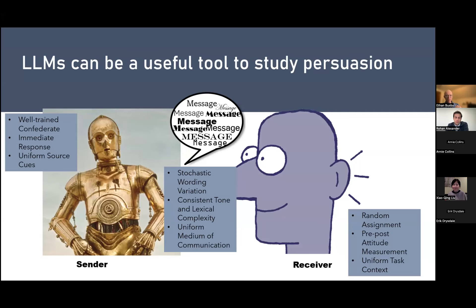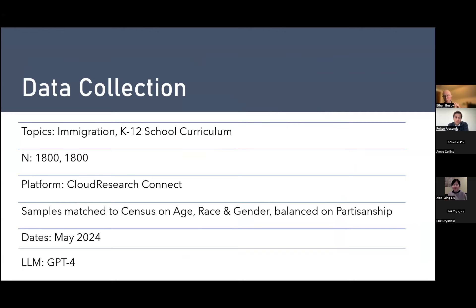To implement this we conducted two data collections, finishing about two weeks ago. We chose two politically salient topics in the United States: immigration and school curriculums in public schools. Each sample has about 1,800 respondents, collected through a vendor called CloudResearch Connect. Samples are matched to the U.S. census on demographics and balanced on partisanship, since we expect partisanship to co-vary with pre-existing attitudes. The specific language model used is GPT-4, working within OpenAI.